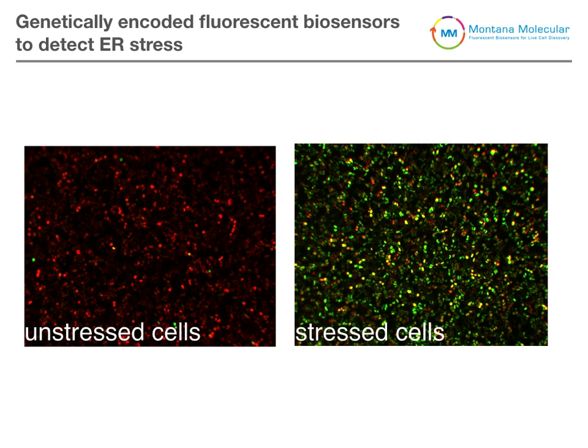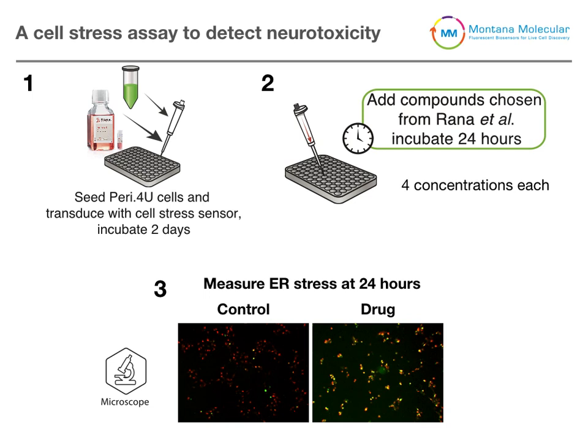We next used this assay to screen for neurotoxic side effects in peri-4u peripheral neurons from Ncardia. The assay protocol looks like this: we first seeded the peripheral neurons in 96-well plates, transduced them with a stress sensor, let them mature for two days, and then added four different compounds from a publication previously analyzing neurotoxic side effects of different chemotherapeutics. We then waited 24 hours and imaged the cells to quantify the increase in cell stress from these different chemotherapeutic compounds.